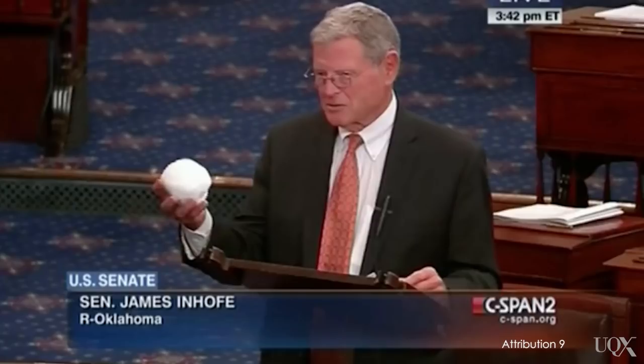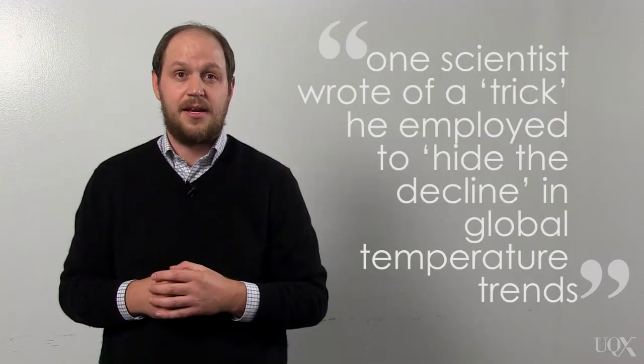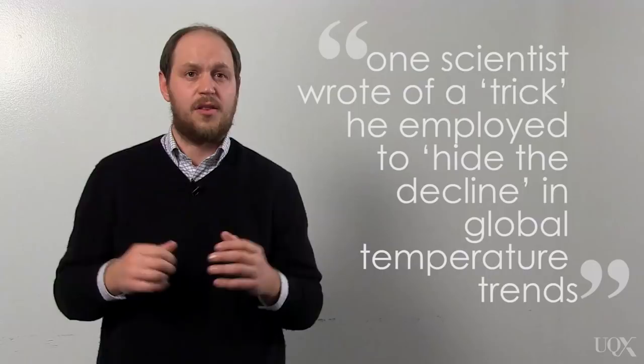Similarly, a past chairman of the United States Senate Committee on the Environment claimed that stolen emails show one scientist wrote of a trick he employed to hide the decline in global temperature trends. These claims are classic examples of conspiracy theory.